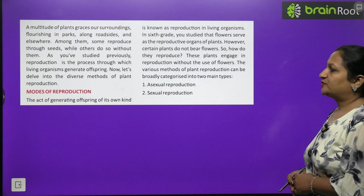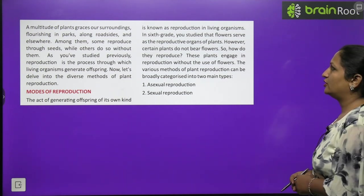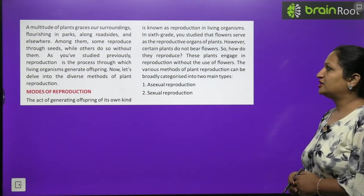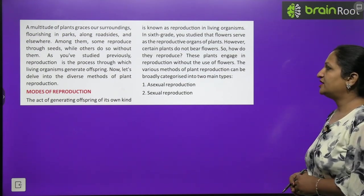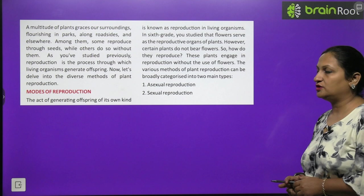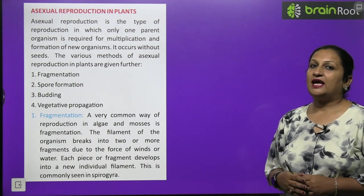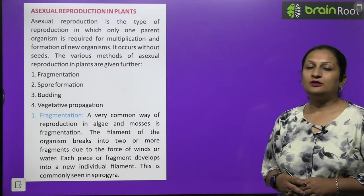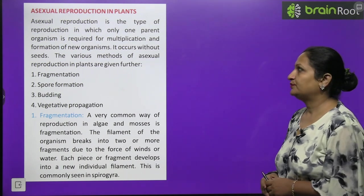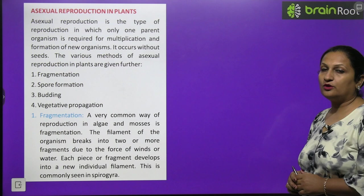Asexual reproduction, as the name indicates, in this reproduction male and female gametes are not involved. Any of the plant part can serve or one parent can serve as a plant for the purpose of reproduction. Only one parent organism is required for multiplication and formation of new organism and this happens without seeds.